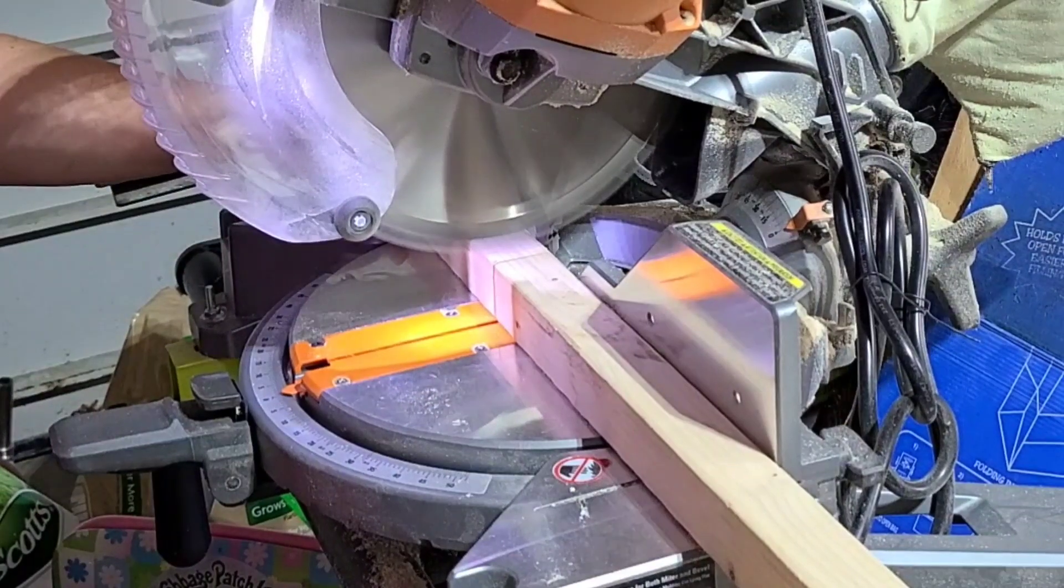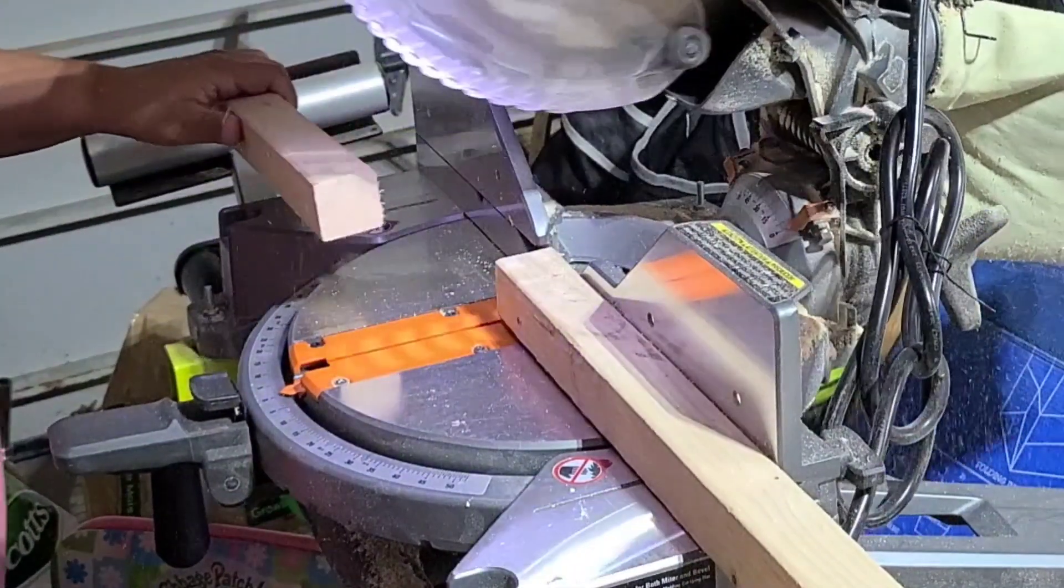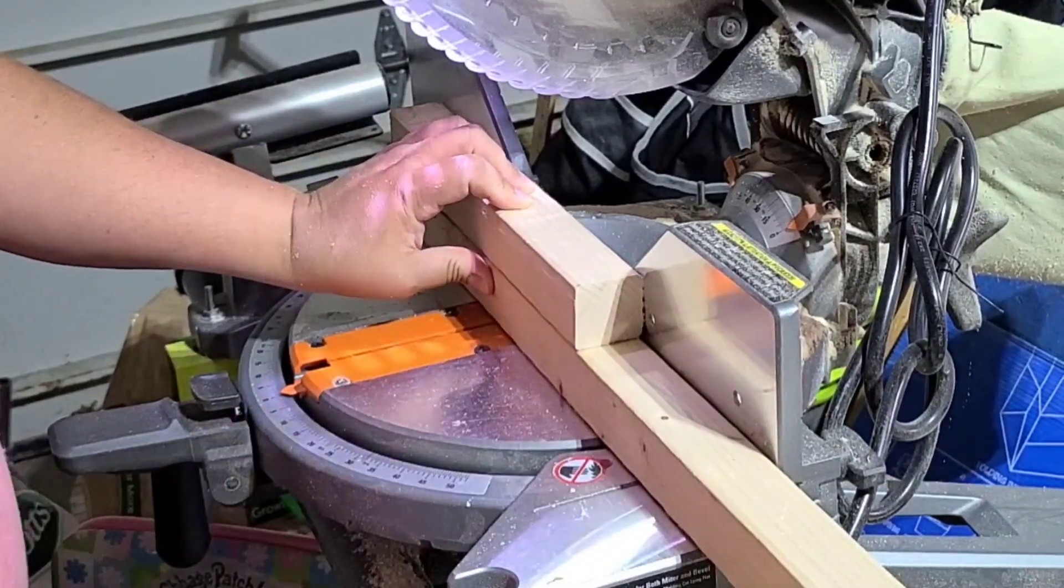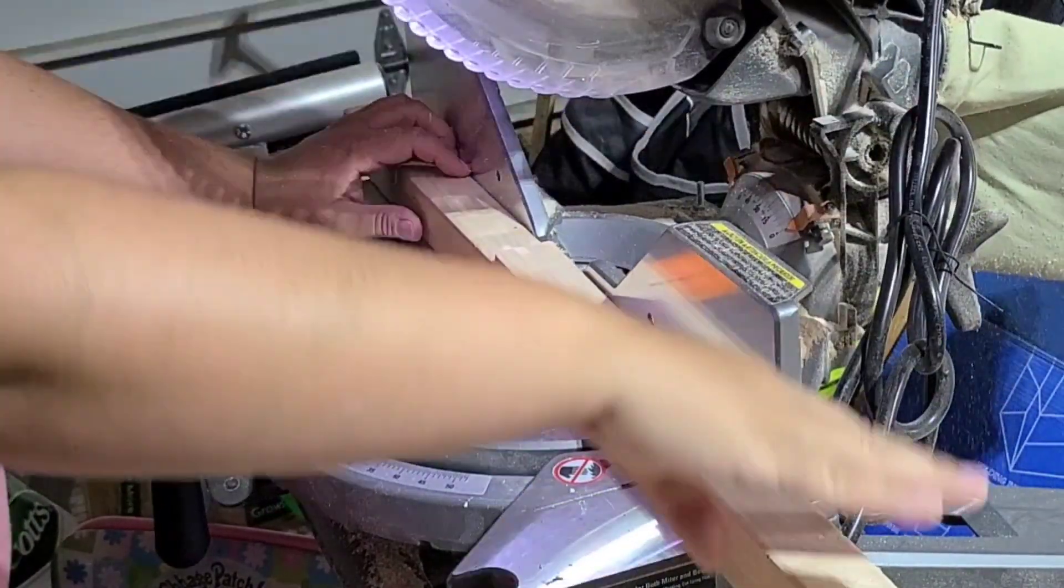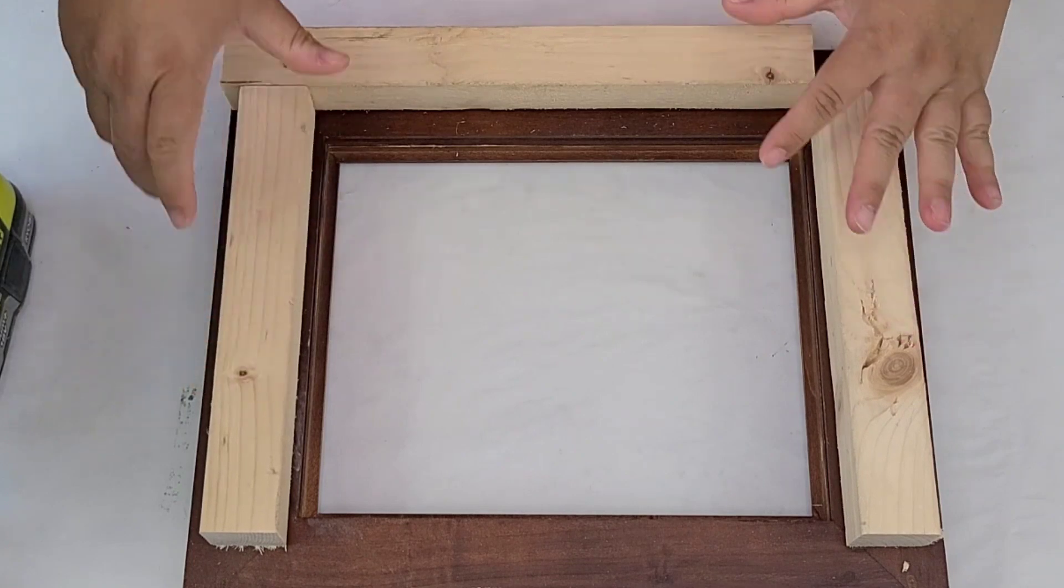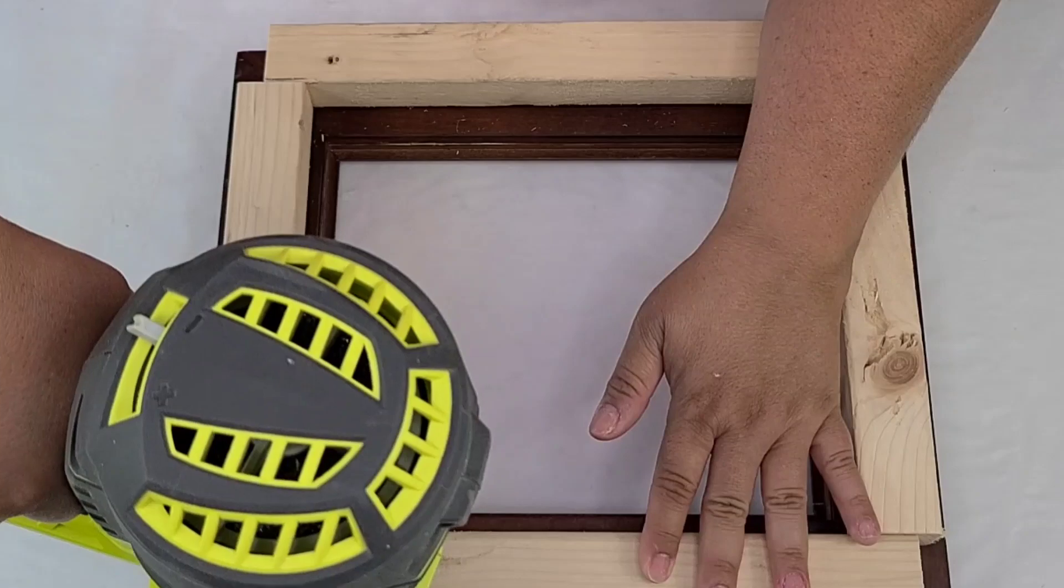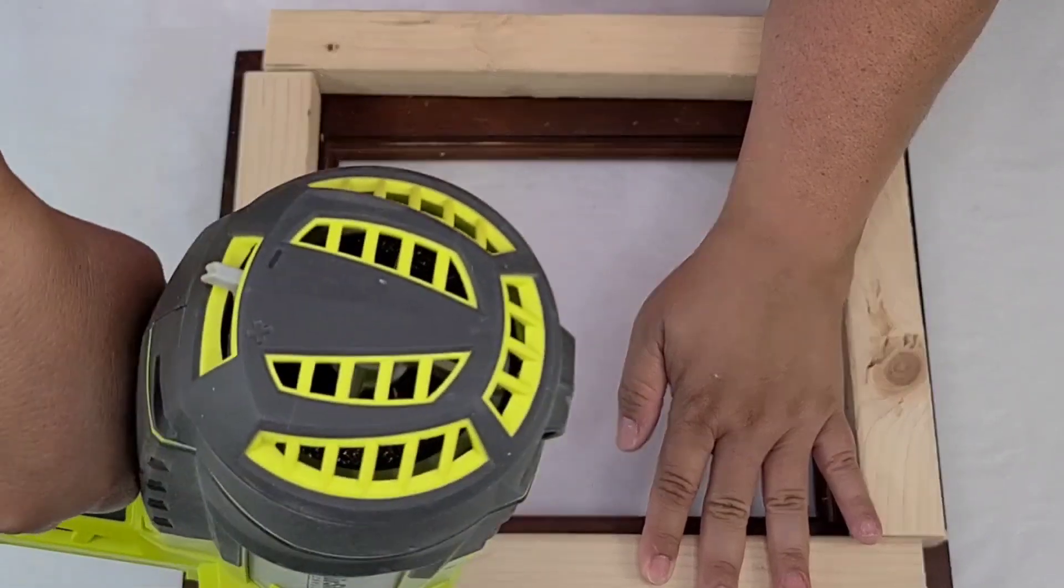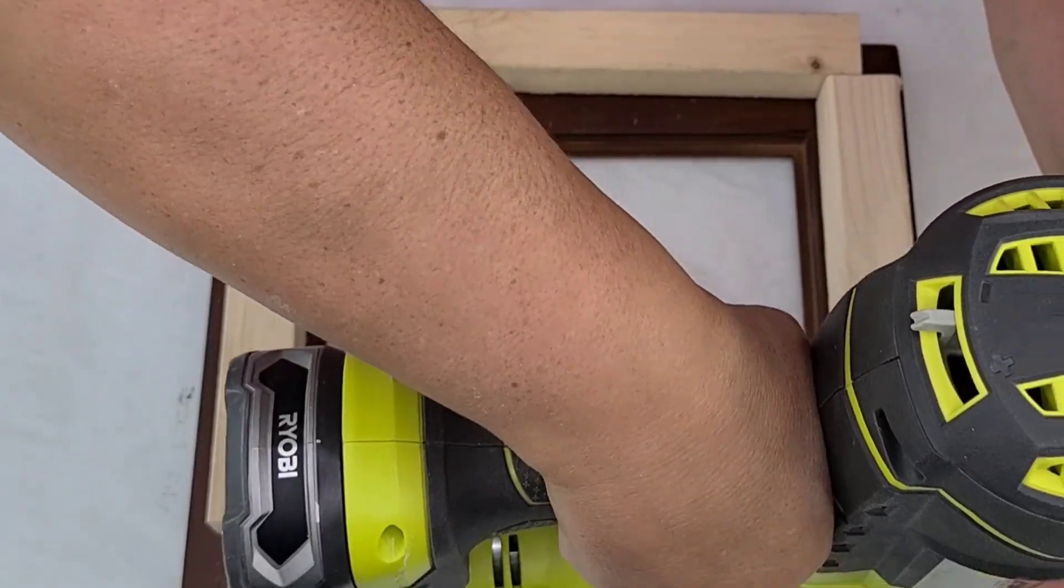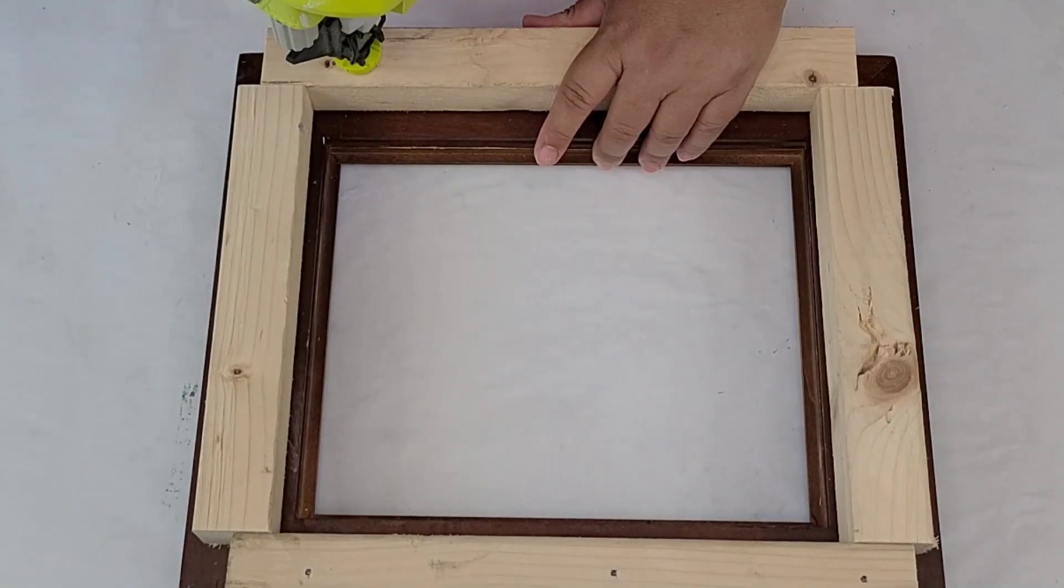For this DIY, we are going to take this picture frame I thrifted very recently for $1.99. Great deal, great quality, love it. I'm also going to take this 2x2 I already had on hand in my garage and I'm going to cut four pieces to fit behind the picture frame. I'm going to secure it in place using brayette nails and that's it. It's going to be very simple. It's not going to be heavy so it does not need anything stronger.